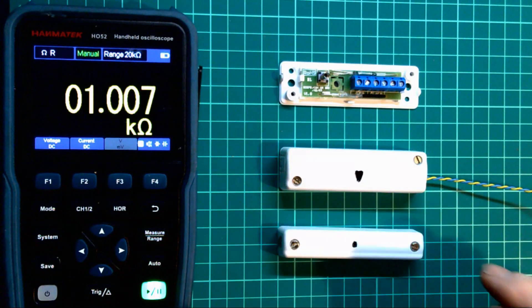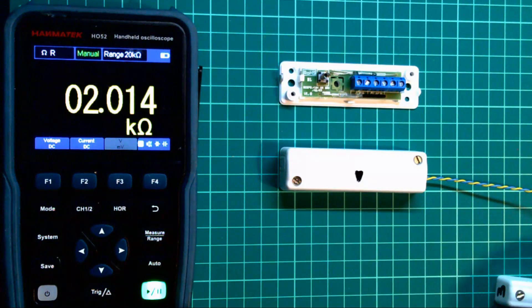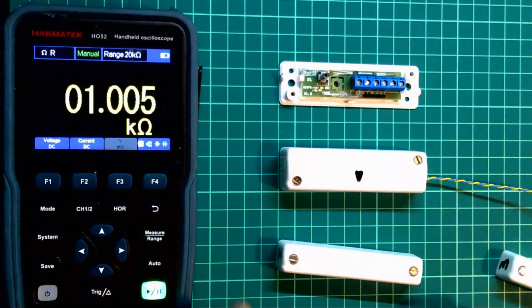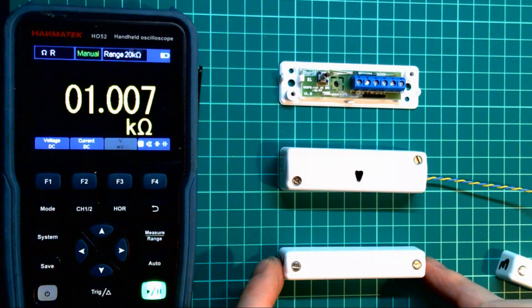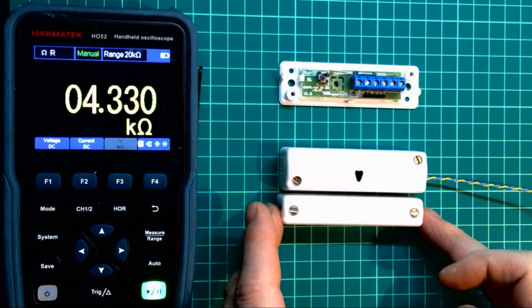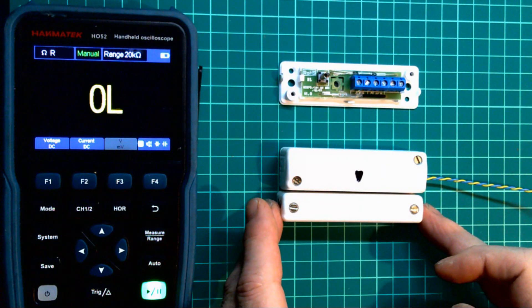Now if I try and do the same with a grid 2 magnet, if I go near it, it goes 1k. Now you can see the distance, that's phenomenal. If I go right up to it, it then goes open circuit.